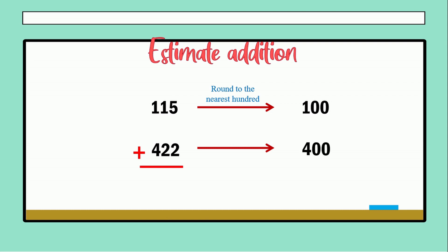For that reason the second addend rounds to 400. So now this is an easy operation: 100 plus 400 equals 500. Now let's check the exact answer: 5 plus 2 is 7, then 1 plus 2 is 3, and in the hundreds 4 plus 1 equals 5. So the exact answer is 537. If we round 537 to the nearest hundred, the answer is 500.